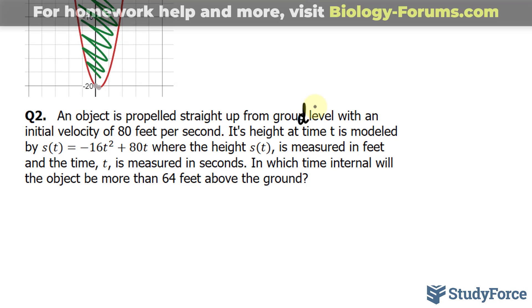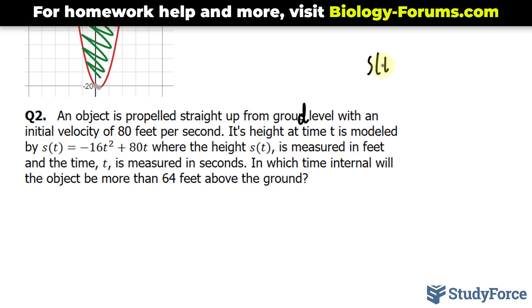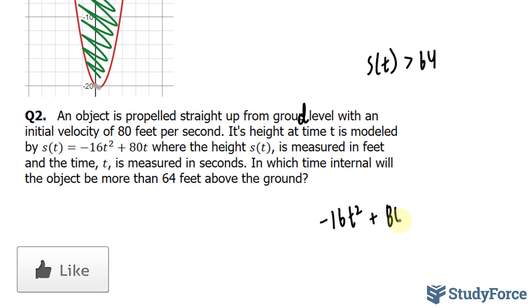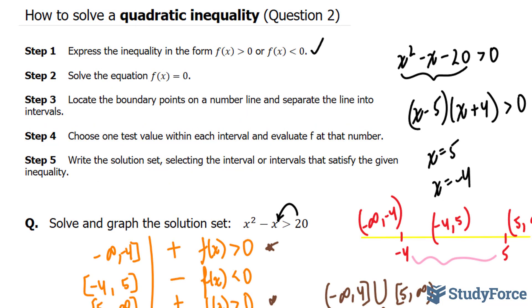What we have to do is set s(t) greater than 64. So technically, our equation is negative 16t to the power of 2 plus 80t is greater than 64. We have to do the exact same thing we did in question number 1, following the 5 steps that you see.